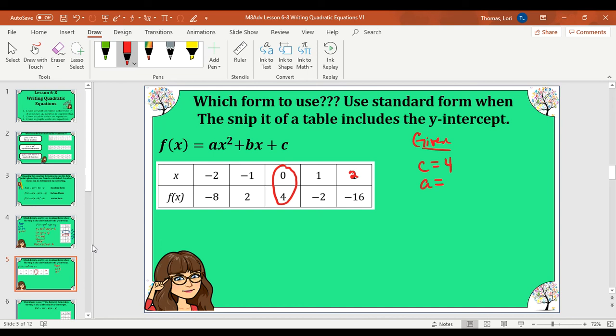Now we are going to find the first difference. So from negative 8 to 2, that went up by 10. From 2 to 4 was up 2. From 4 to negative 2 was down 6. And then from negative 2 to negative 16 is going to go down 14. So that's the first difference. Definitely not a linear function. Now we're going to find the second difference. From 10 to 2 is going down 8. From 2 to negative 6 is down 8. And from negative 6 to negative 14 is down 8. So our second difference is constant, so that means it's quadratic. We're going to take the second difference and we're going to divide it by 2.